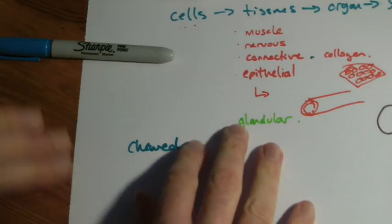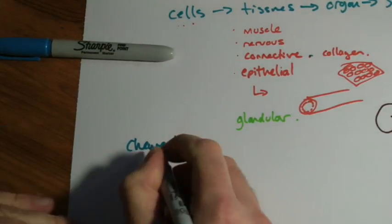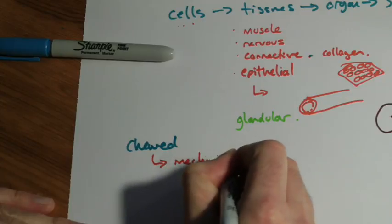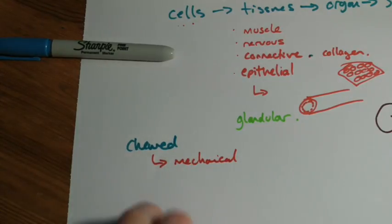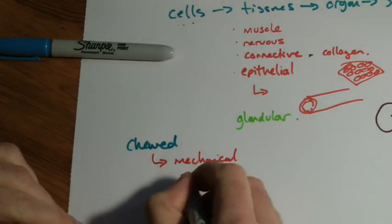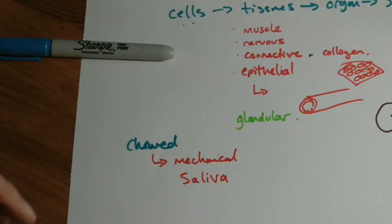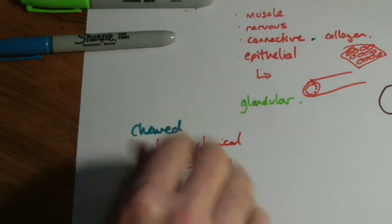Sometimes this is referred to as mechanical digestion, where your teeth will mash the food openly. You mix it with saliva, an easy one to misspell. That makes it easier to swallow. It lubricates the food.